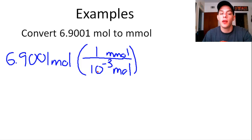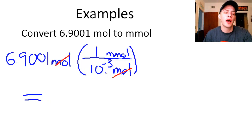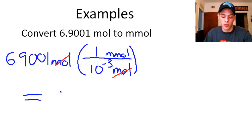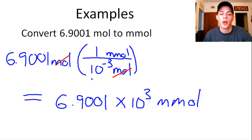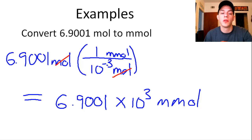Making sure our units cancel: moles on the left cancels with moles in the denominator. Our final result — you don't even really need a calculator for this. Dividing by 10 to the negative 3 is the same as multiplying by 10 to the positive 3. So our result is 6.9001 times 10 to the 3 millimoles. In our starting quantity we have 5 significant figures, and our conversion factor has infinite significant figures because it's an exact number. Since this is multiplication, we use the fewest number of sig figs, so our result has 5 sig figs.